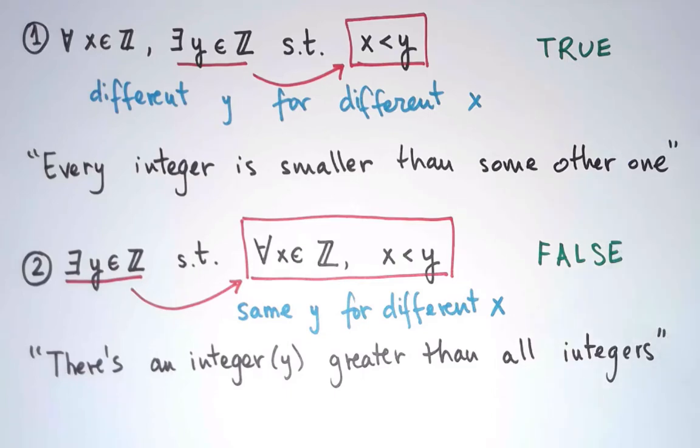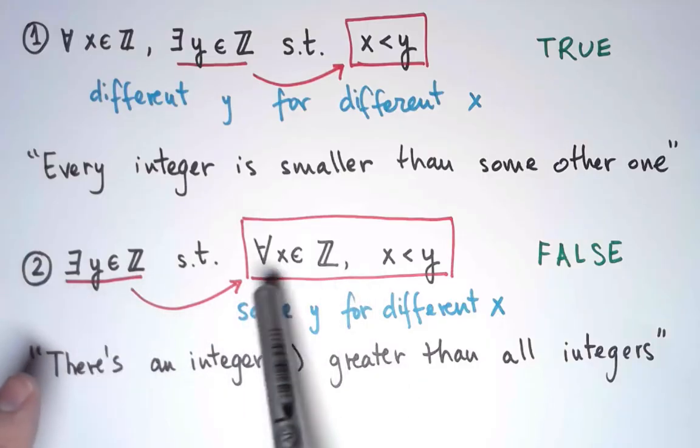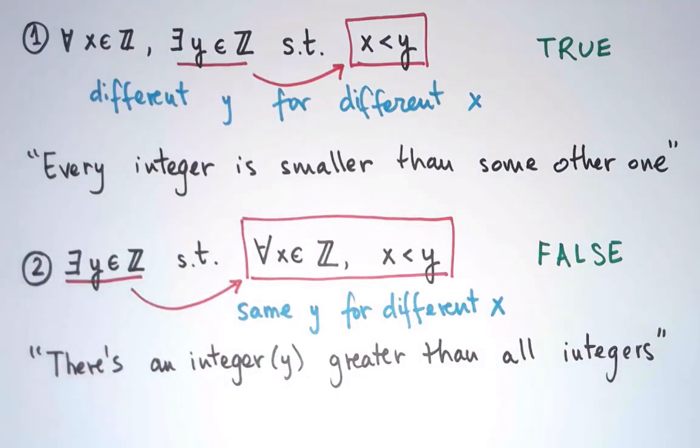And that is the difference. So the moral is that when we have statements with multiple quantifiers, and they can get much bigger with many more, the order matters a lot. Because the order tells us what depends on what, and whether a variable is allowed or not to change when a different variable changes.